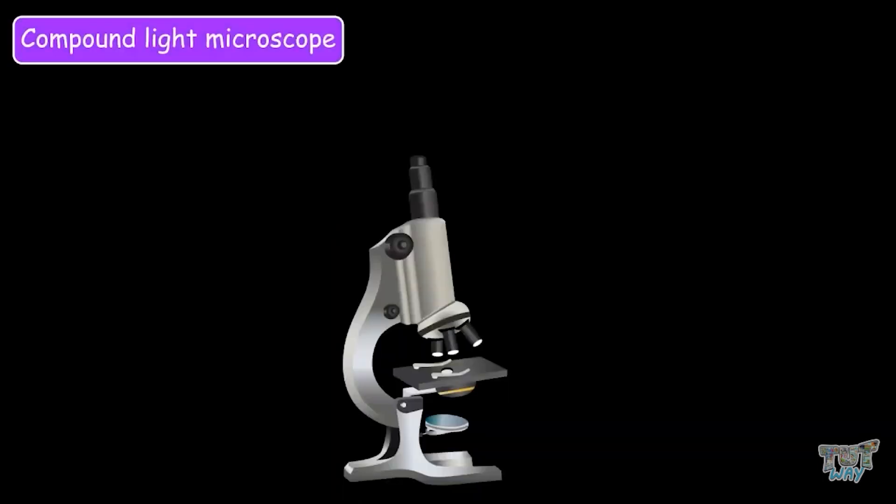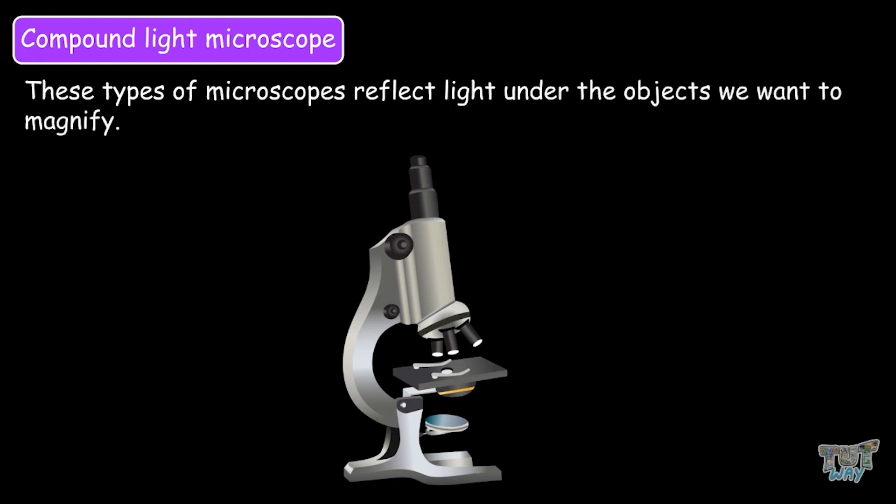The compound light microscope: This type of microscope reflects light under the objects we want to magnify and this light is then passed through two lenses which makes their image larger.